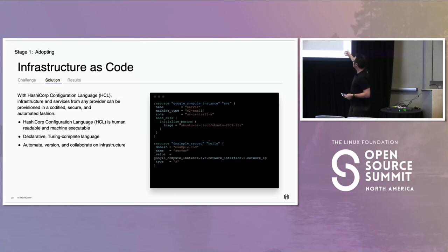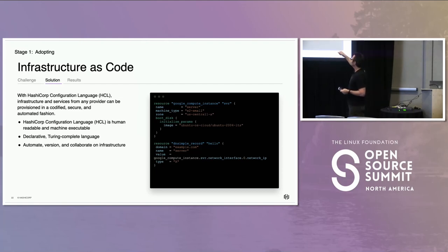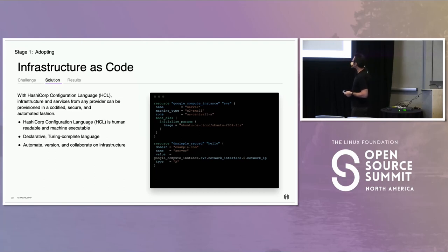Everything in Terraform is written in HCL — HashiCorp Configuration Language. If I were to put HCL on a spectrum, YAML is at one end for human readability, JSON is at the other for machine speed, and HCL sits in the middle. Here's an example of two resources: a GCP instance and a DNS record pointing to it. The second resource depends on the first, and you can see the value points to the output of the first resource. It's a declarative, Turing-complete language.